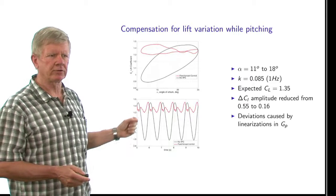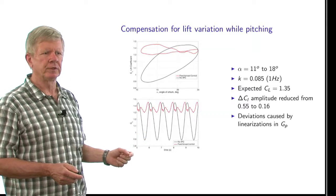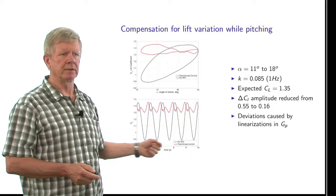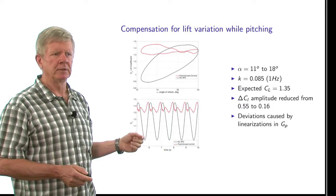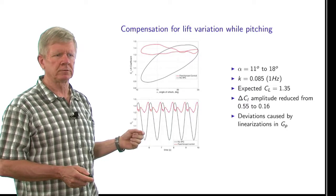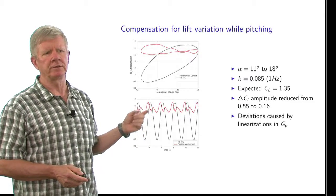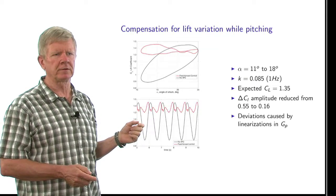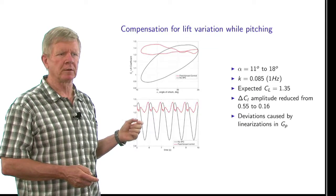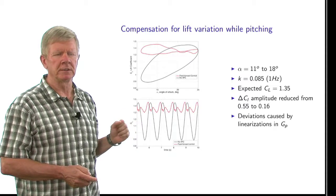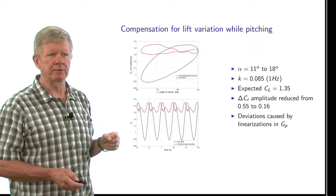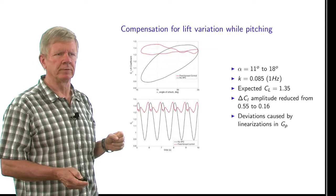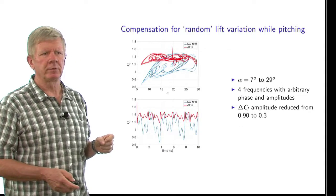The lower plot shows the lift coefficient versus the time on the horizontal axis. Again, the black line is without flow control, and the red line shows the oscillations. And you can see that there's been a very significant, almost three times reduction in the amplitude of these lift fluctuations with this type of control.